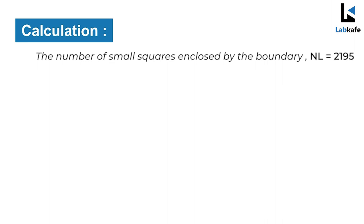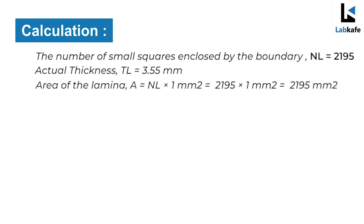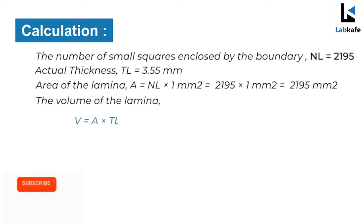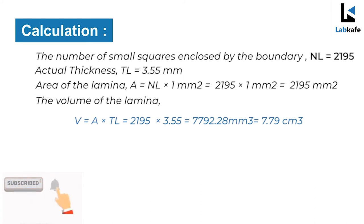Calculation: the number of small squares enclosed by the boundary NL equals 2195. The actual thickness tL equals 3.55 mm. Therefore the area of the lamina A equals NL × 1 mm², which equals 2195 mm². Therefore the volume of the lamina V equals A × tL, which is 2195 × 3.55, equals 7792.25 mm³, or 7.79 cm³.